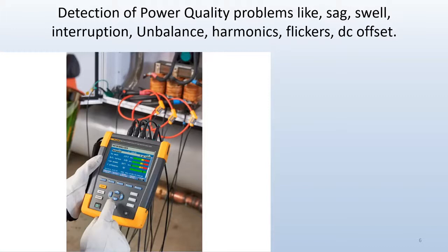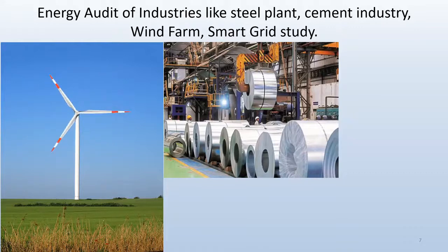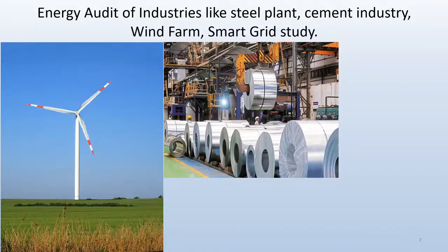First, it will be used where there is a problem in the power, such as sag, swell, interruption, unbalance, harmonics, flicker and DC offset. Whenever we want to detect and analyze those problems, we can use the analyzer. Another case is in the industrial sector as an energy analyzer — in major industries like steel plant, cement industry, wind farm and smart grid study. These are also fields where the energy analyzer can be used, along with harmonic-producing loads like inverters and PV inverters for grid interconnection.